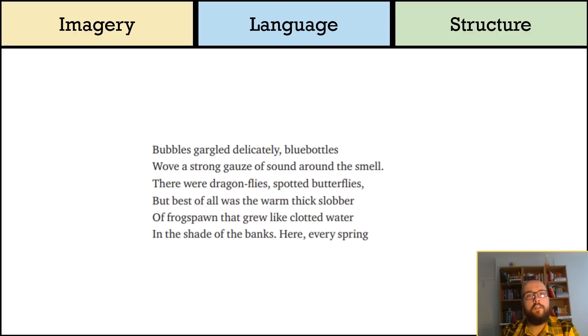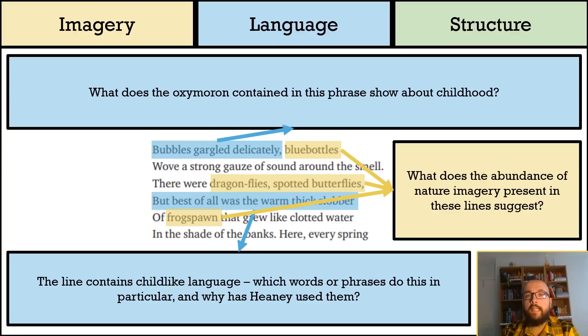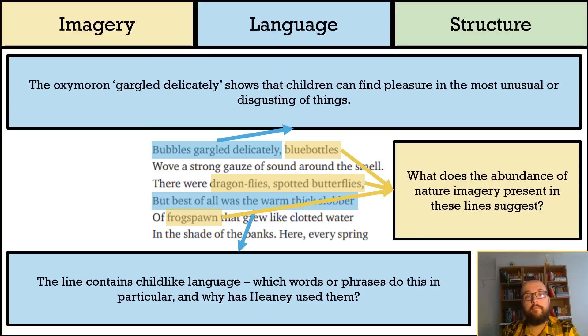Here we have the poem's next six lines, and there are three questions for them — hopefully relatively straightforward and you should be able to give them a go on your own. There's an oxymoron present in the phrase 'gargled delicately', since gargling can be quite a rough, guttural, blunt sound and anything but delicate. However, this use of oxymoron shows that the youthful persona finds pleasure in the sounds of nature, no matter how disgusting or obtuse they may be.